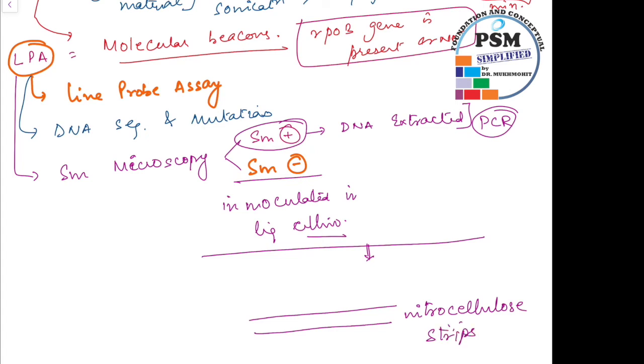On these strips there are probes, DNA probes which are specific for mycobacterium tuberculosis and the mutations. So these probes they will act as the attachment sites for the mycobacterium and the drug resistance genes in case there are.